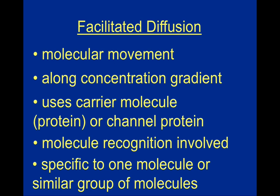Carriers and channels are very, very specific — they only allow the transport of certain substances. For example, a sodium channel allows sodium to move from one side of the membrane to the other, but potassium will not be able to go through that channel. Potassium needs to find the potassium channel. These will be specific to a single molecule or perhaps a similar group of molecules. In order for facilitated diffusion to take place, molecules must be recognized to ensure they can pass through that channel or enter that carrier molecule.